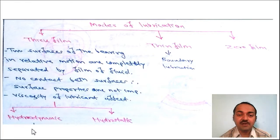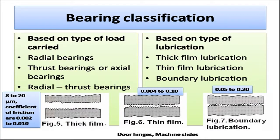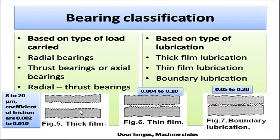Thick film lubrication is divided into two types: hydrostatic bearing and hydrodynamic bearing. Bearing classification based on type of load carried: radial bearing, thrust or axial bearing, and radial-thrust bearing. In thick film lubrication there is complete separation of the two components — shaft and bearing — with the coefficient of friction 0.001 to 0.02. In thin film lubrication the coefficient of friction is 0.004 to 0.10, with partial metal-to-metal contact.